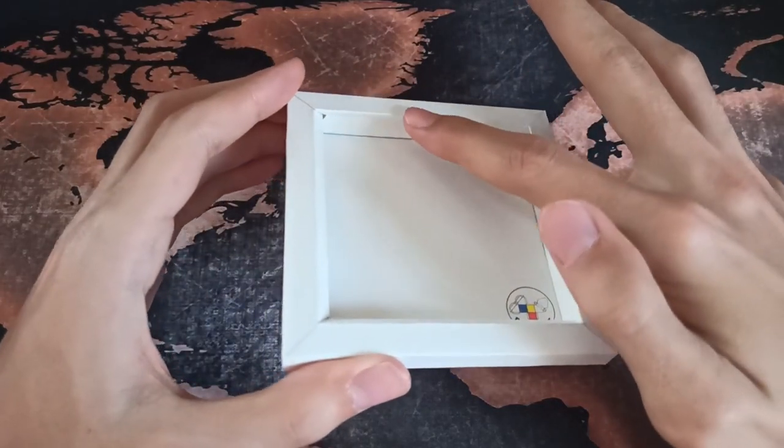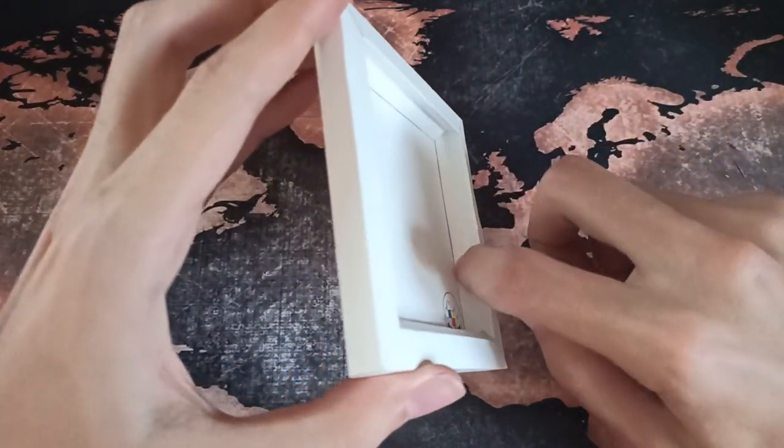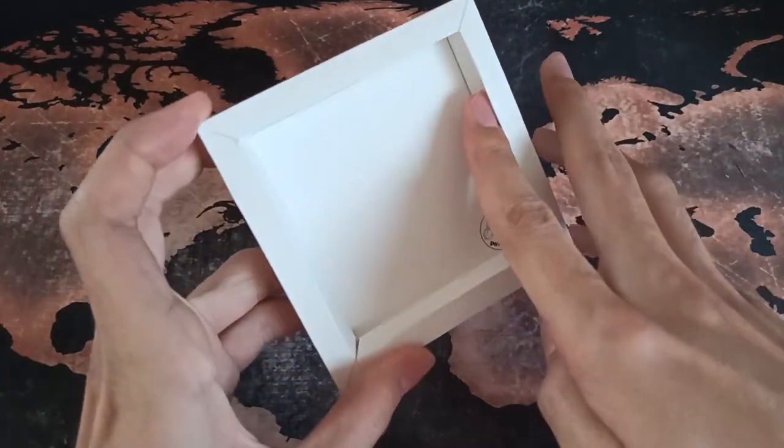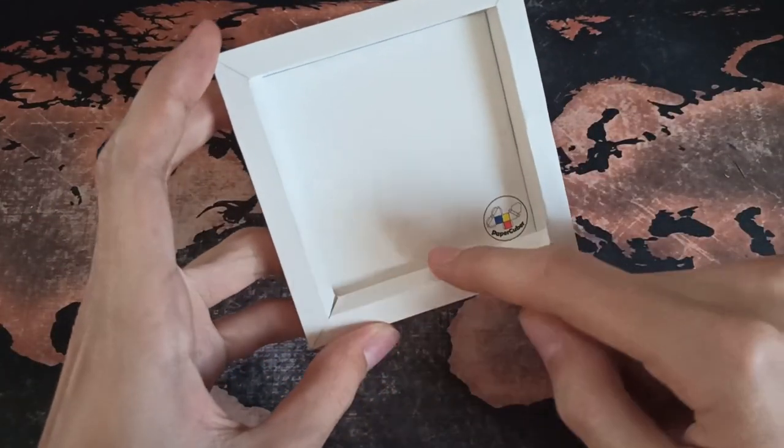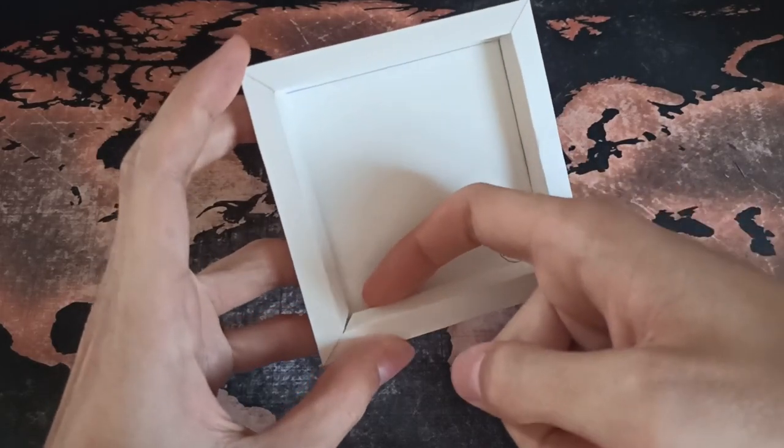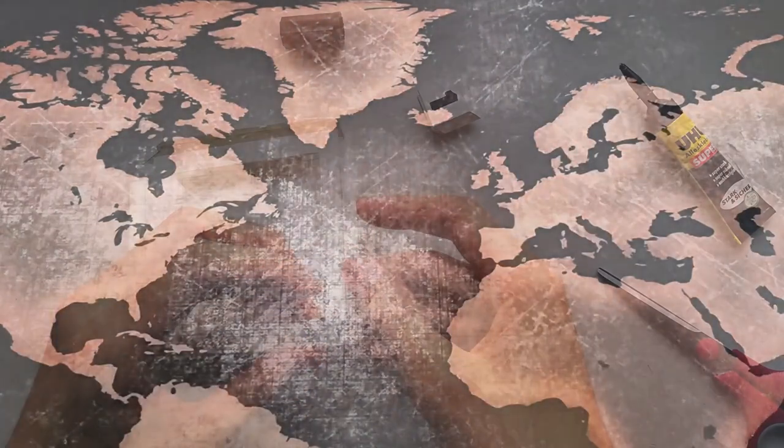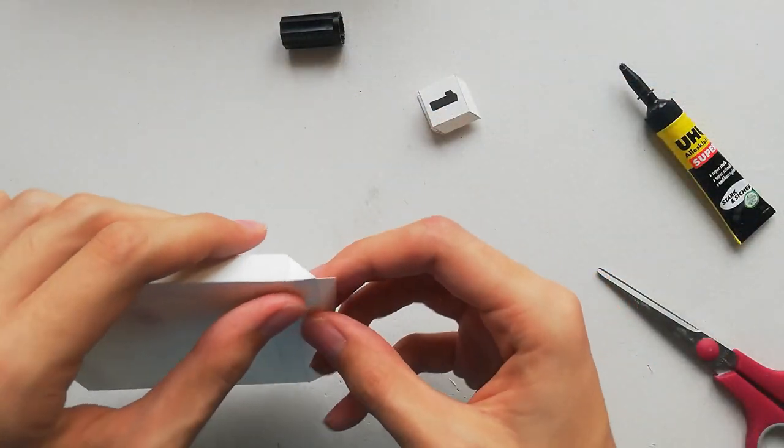Before we do that make sure that the inner walls are folded like you can see here. So these two go away from the middle and the other two go towards the middle. When this is correct we can continue by gluing the outer walls to the frame.